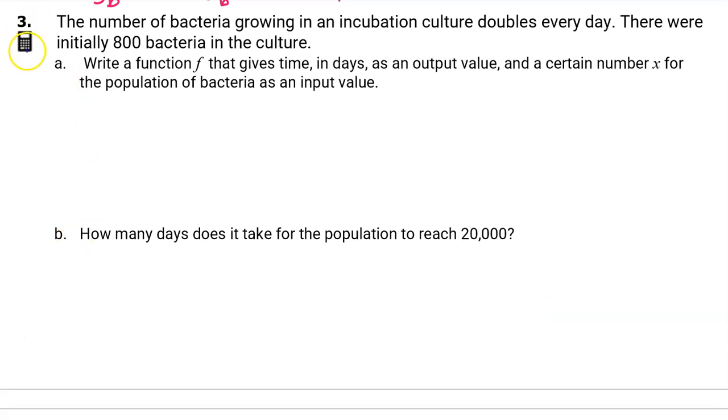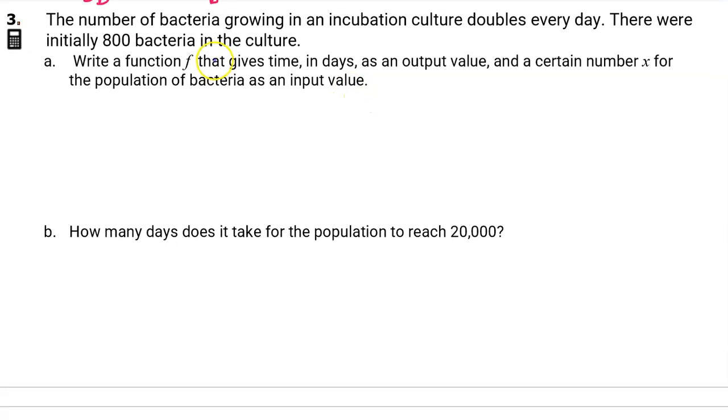Number 3 is calculator active. The number of bacteria growing in an incubation culture doubles every day. There were initially 800 bacteria in the culture. Part A: Write a function f that gives time in days as an output value and a certain number x for the population of bacteria as an input value. Because we have a population that is growing and doubling every day, that is exponential growth. So normally we would write y equals, and then we would start with the initial population of 800. And then the multiplier comes from the fact that the population is doubling. So the multiplier is a base of 2. And then we would put to the t power like this.